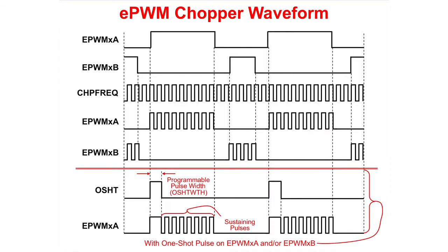As you can see in this figure, a high frequency carrier signal is ANDed with the EPWM outputs. Also, this circuit provides an option to include a larger one-shot pulse width before the sustaining pulses.